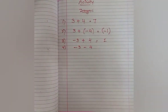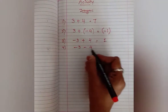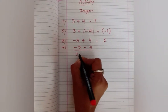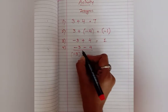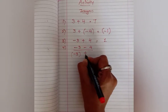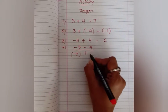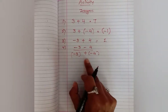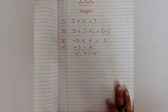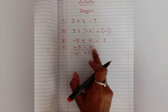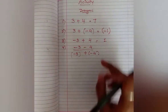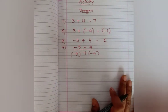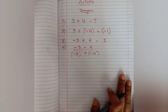This sum can also be written as: minus three plus (minus four), where the minus sign comes into the bracket. So minus three plus minus four and minus three minus four — both questions are equal and will give the same answer.